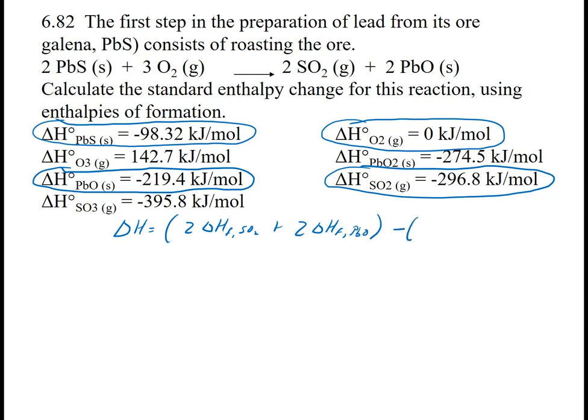minus - I have 2 sulfides, so 2 times the delta H of formation of PbS, plus I have 3 oxygens, so 3 times the delta H of formation of O2.